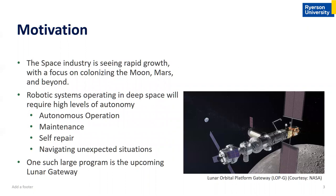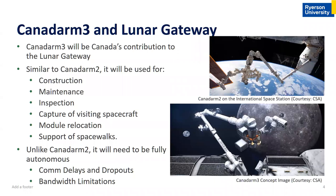The motivation of this problem is the space industry. As we move further from Earth in our space operations, we need robotic systems that are more autonomous. One such project is the Lunar Gateway, on which Canada is contributing the Canadarm3. Canadarm3 will need to be far more autonomous than Canadarm2 — unlike the ISS where we had 24-hour communication, with Canadarm3 we will only have an eight-hour window per week, and even then we'll be competing for bandwidth with other systems.